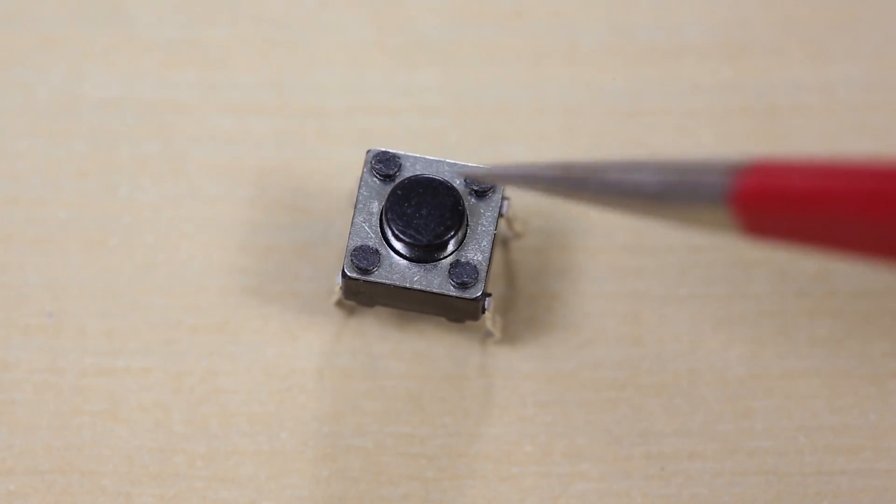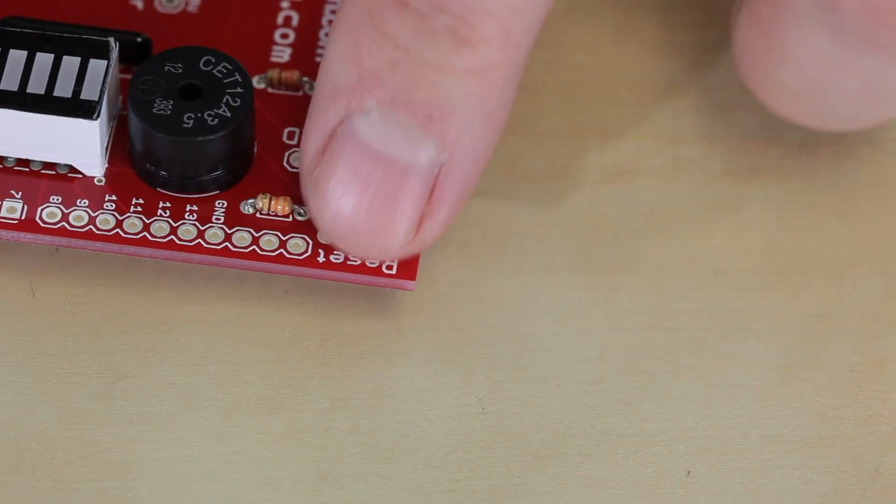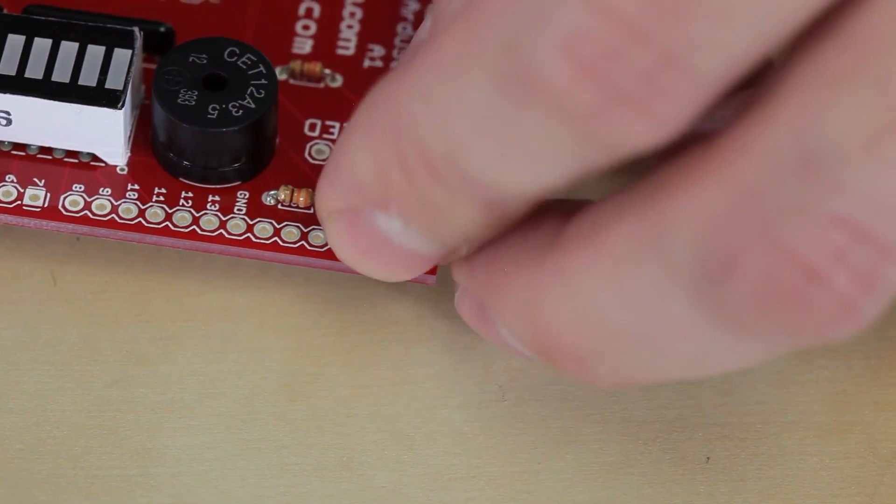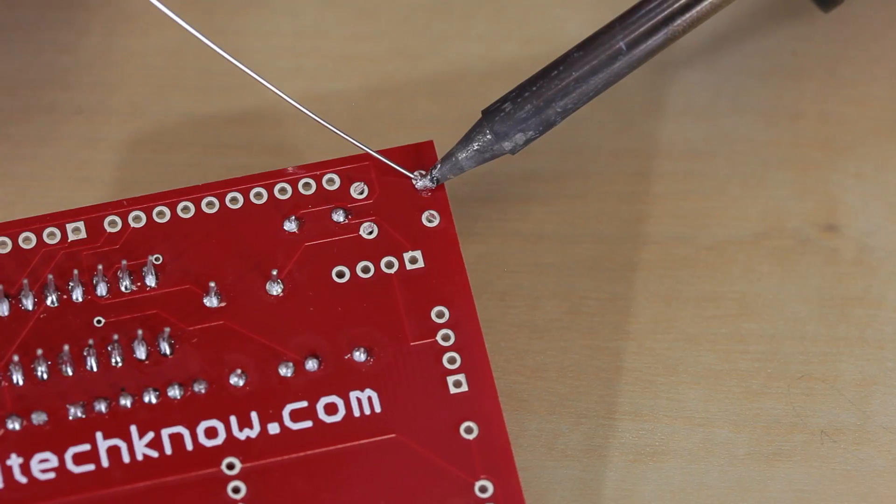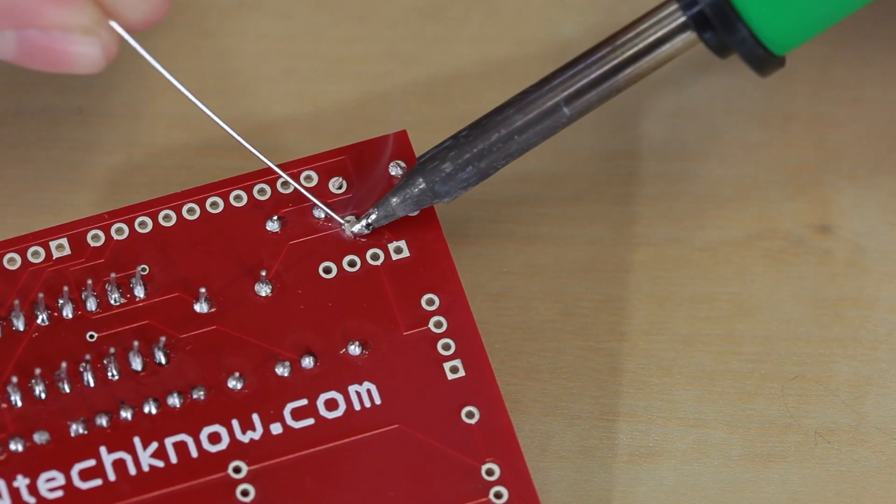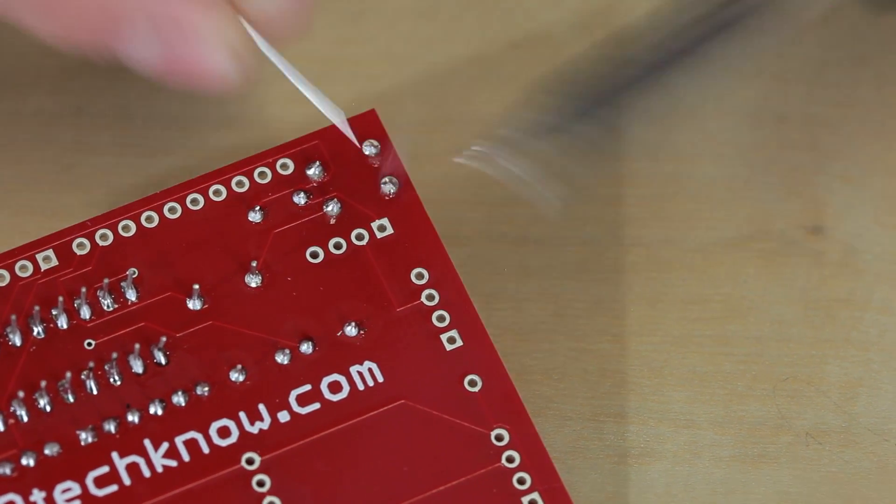Now we're going to solder in the push button. The push button will go right here by the reset, so we'll just press it in there. It'll have a nice little snap to it. We'll flip it around and solder it in. There are two push buttons in this kit and they're both the same.